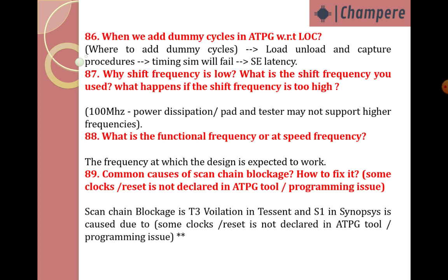What is functional frequency or at-speed frequency? It is the frequency at which the design is expected to work. Common causes of scan chain blockage: in Tessent it's a T3 violation, in Synopsys it's an S1 violation. Caused by clocks or reset not declared in the ATPG tool, or by a programming issue.